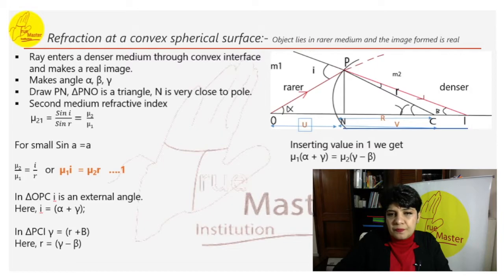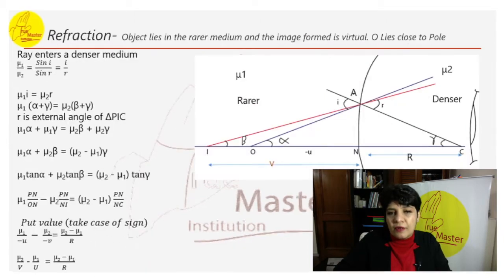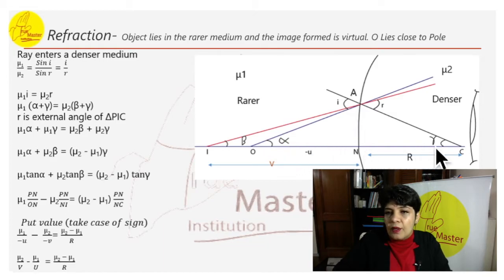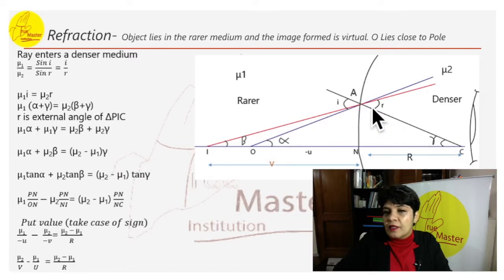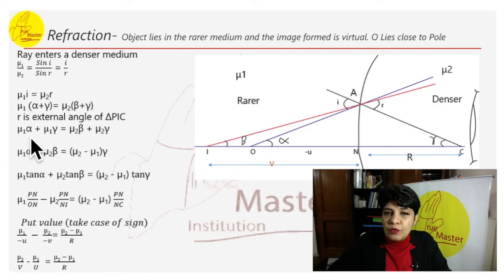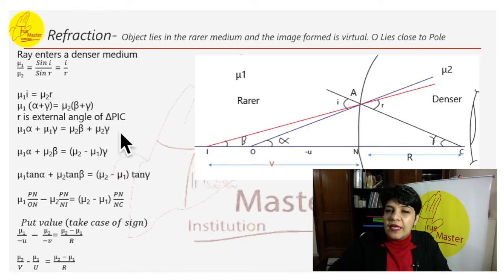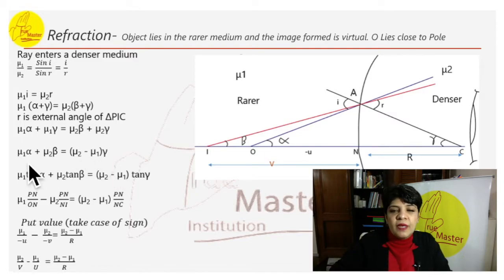For this case, i equals alpha + gamma (exterior angle of triangle), and r equals beta + gamma (the complete angle is taken as exterior angle). Substituting: mu_1 · (alpha + gamma) = mu_2 · (beta + gamma), giving mu_1 · alpha + mu_1 · gamma = mu_2 · beta + mu_2 · gamma. Bringing gammas to one side: mu_1 · alpha + mu_2 · beta = (mu_2 − mu_1) · gamma.